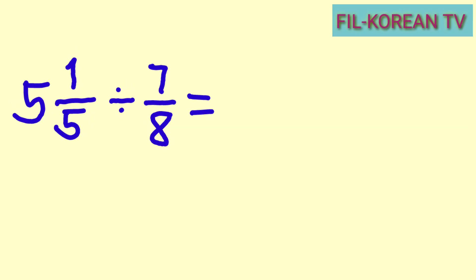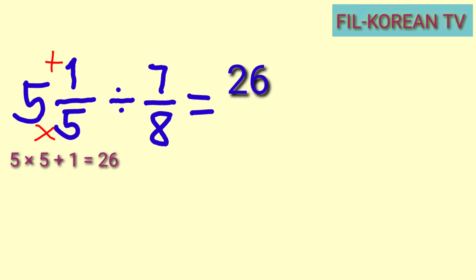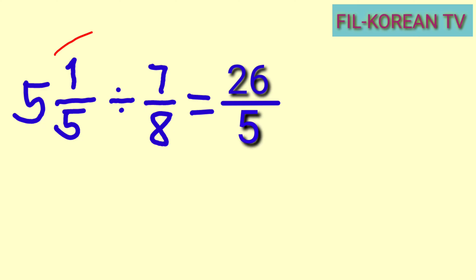Let's answer now. First, let's change five and one fifth to an improper fraction. We will multiply the denominator five by the whole number five and add the numerator one. So five times five equals 25, plus one equals 26. So 26 is the new numerator and we will copy the denominator five. It is now an improper fraction.